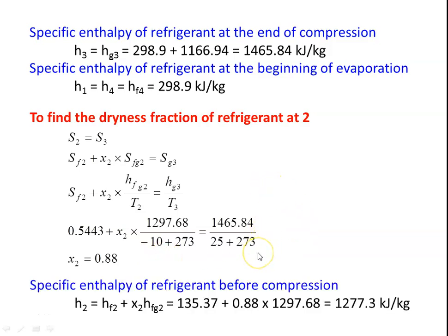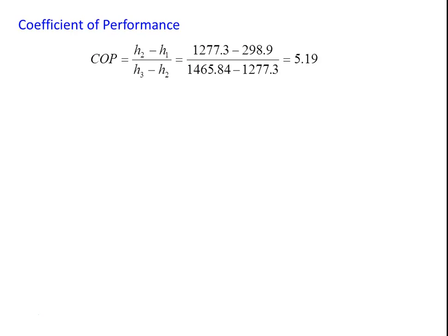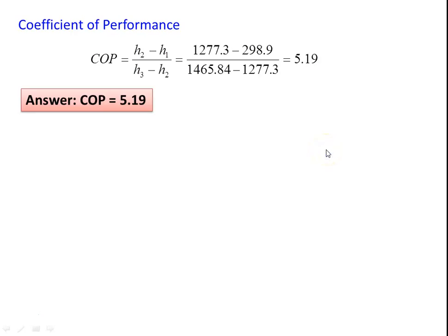The specific enthalpy of the refrigerant before compression: H2 = HF2 + X2 × HfG2 = 135.37 + 0.88 × 1297.68 = 1277.3 kJ/kg. Calculating the COP = (H2 - H1) / (H3 - H2), substituting all values gives COP = 5.19.